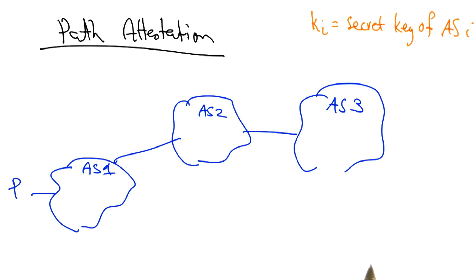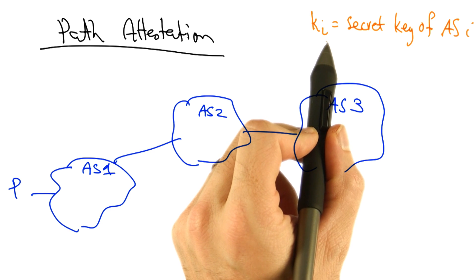Let's assume that we have a path with three ASs: one, two, and three. And that each AS has a public private key pair.